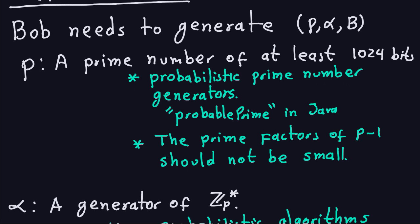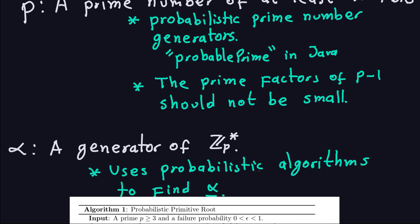Another security requirement for the prime P is that the prime factors of P minus 1 should not be small. By prime factors, I mean those other than 2 — since P is odd, P minus 1 is even, so 2 will always be a divisor. The reason is that if you chose small factors other than 2, it would be possible to compute discrete logs and break the Elgamal scheme.